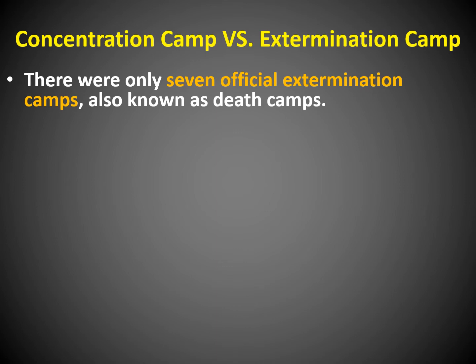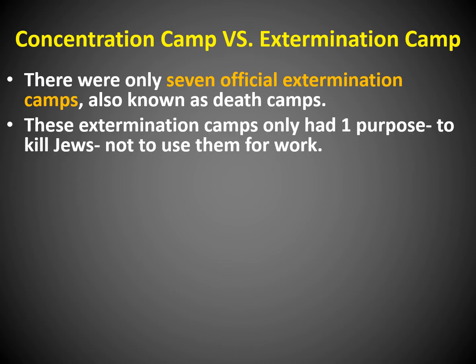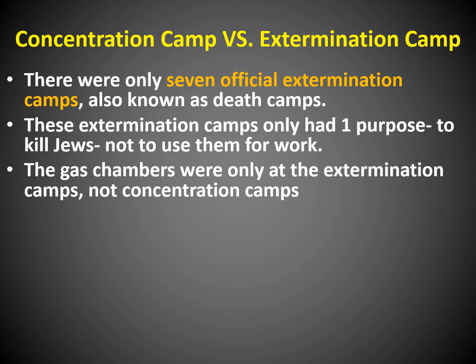There were only seven official extermination camps, also known as death camps. I'm going to show a map of Western Europe showing how many concentration camps and extermination camps there were and where they were located. These extermination camps had only one purpose — to kill Jews. Gas chambers were only at the extermination camps, not the concentration camps.